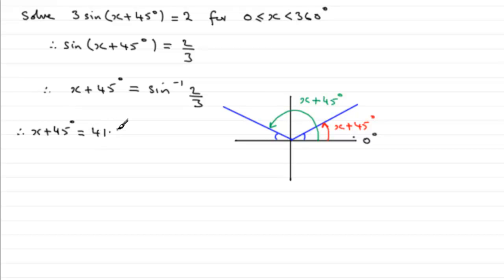Now the common mistake that a lot of students I find make is to take the 45 degrees immediately away from this and then go on to do the quadrant diagram. Don't. Always do the quadrant diagram at this point here.